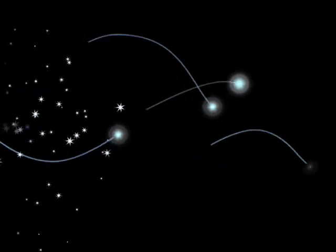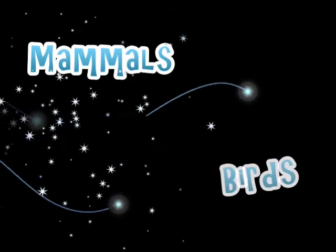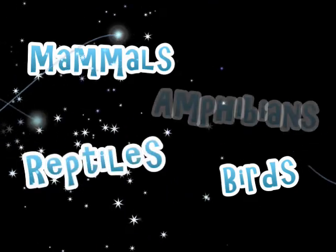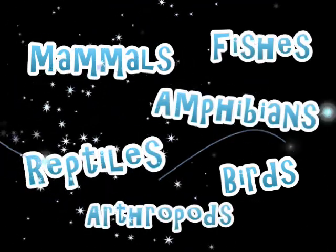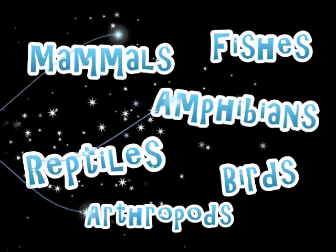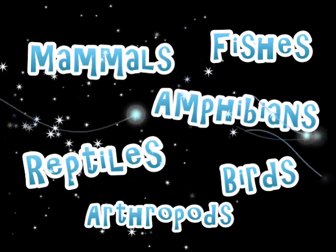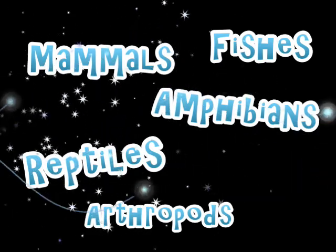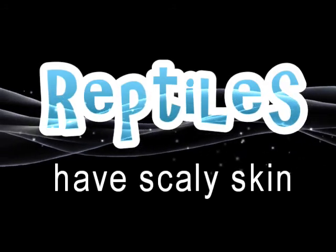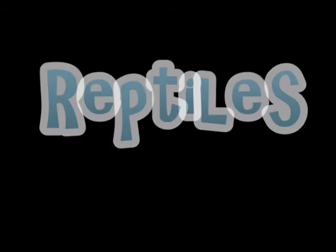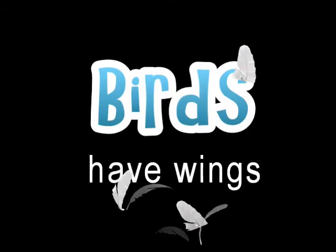Some major animal groups include mammals, birds, reptiles, amphibians, fishes, and arthropods. Scientists classify animals into these groups by finding the things they have in common — things they inherited from distant ancestors. For instance, all reptiles have scaly skin, and all birds have wings.